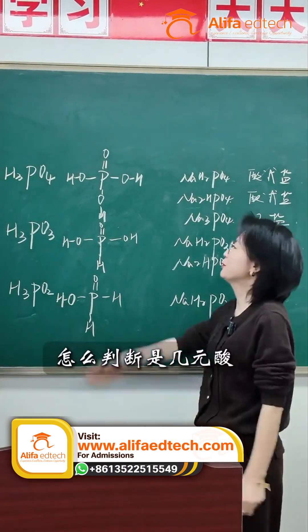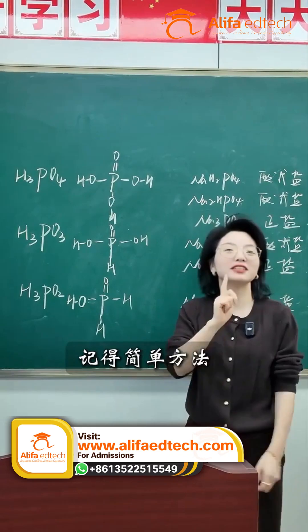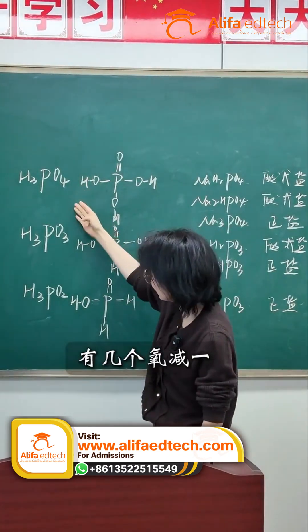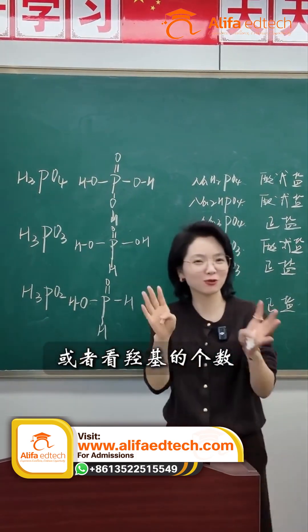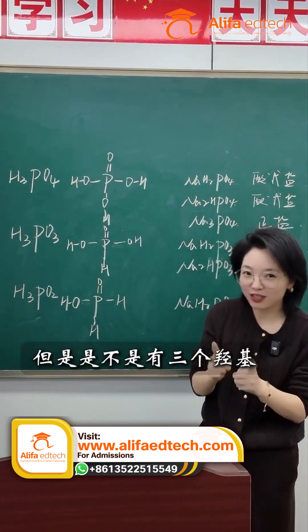So, how do you determine if it's a protoacid? There are a few simple methods. Subtract one, and the remaining number indicates the protoacid category, or look at the number of hydroxyl groups. But does having three hydroxyl groups now